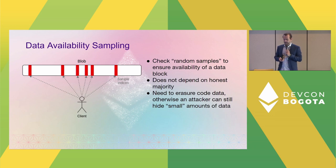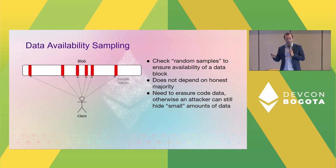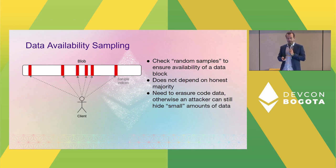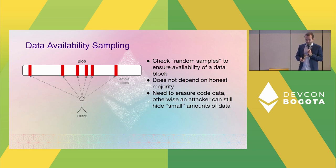If we do this naively, just taking the data as-is, it doesn't work. Even missing a tiny amount of data could be catastrophic for a blockchain. By random sampling, you can only detect whether major parts of the data are missing, not tiny bits. So we need to encode the data such that even having 50% of it is enough to guarantee all the data is recoverable.